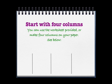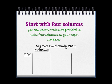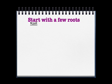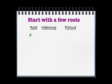Or you can make four columns on your paper, titled 'Root Word Study Chart.' The four columns should be: root, meaning, picture, and words. I tend to make the picture and meaning columns a little larger so that I can draw a picture in there. I'm going to start with just a few root words and explain each one and how I want you to do this chart.